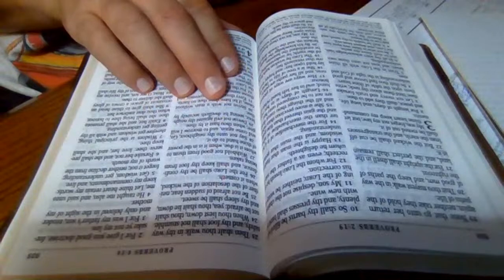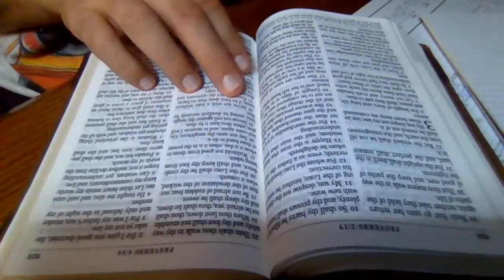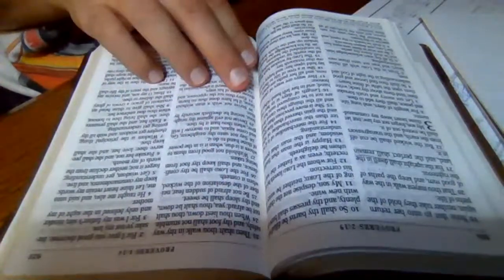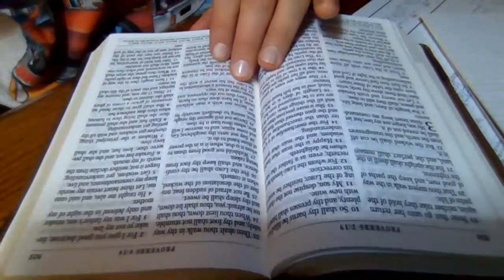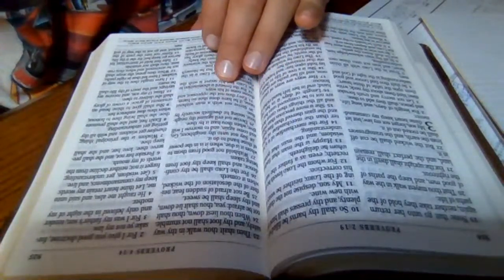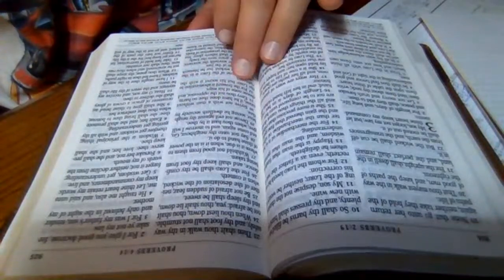Devise not evil against thy neighbor, seeing he dwelleth securely by thee. Strive not with a man without a cause if he have done thee no harm. Envy thou not the oppressor and choose none of his ways.